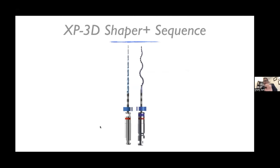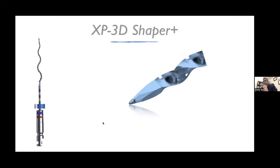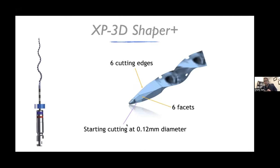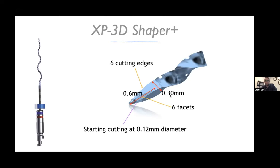One very important aspect of the Shaper Plus is its tip, which has six cutting edges and six cutting facets — this expedites instrumentation and makes it much faster. It starts to cut at 0.12 mm diameter and can reach 0.3 mm in just 0.6 mm of work, making it essentially a one-step instrumentation to reach ISO size 30, thanks to this expeditive tip.